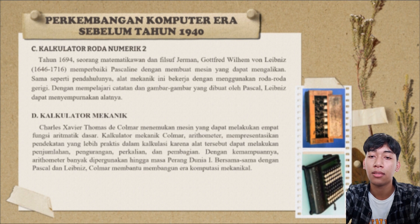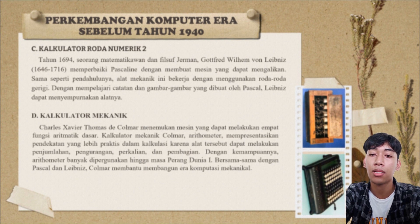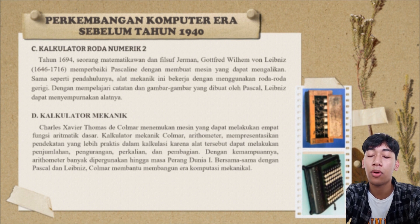Thomas de Colmar menemukan mesin yang dapat melakukan empat fungsi aritmatik dasar. Kalkulator milik Colmar, yang disebut aritmometer, menawarkan kemudahan yang lebih praktis dalam kalkulasi karena alat tersebut dapat melakukan penjumlahan, pengurangan, perkalian, dan pembagian. Dengan kemampuannya itu, aritmometer banyak dipergunakan hingga menjelang Perang Dunia I.